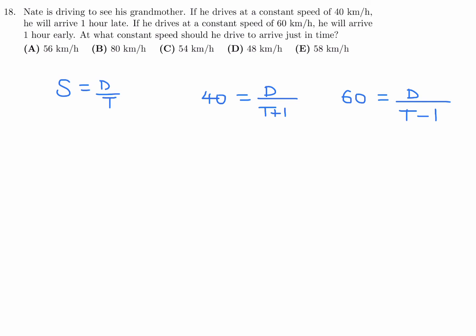Cross multiply and you get 40T plus 40 is equal to D. Cross multiply here, you get 60T minus 60 is equal to D. Set them equal to each other and get 40T plus 40 is equal to 60T minus 60. So that means 100 is equal to 20T. T, therefore, is equal to 5.